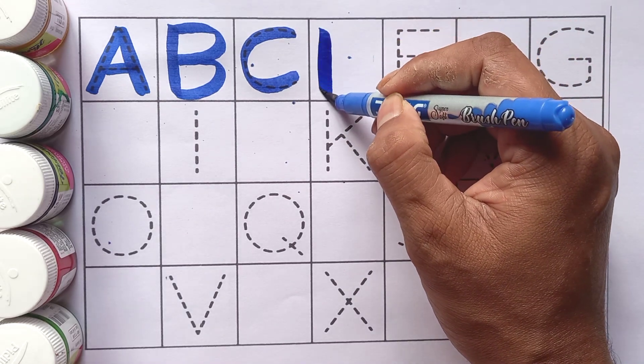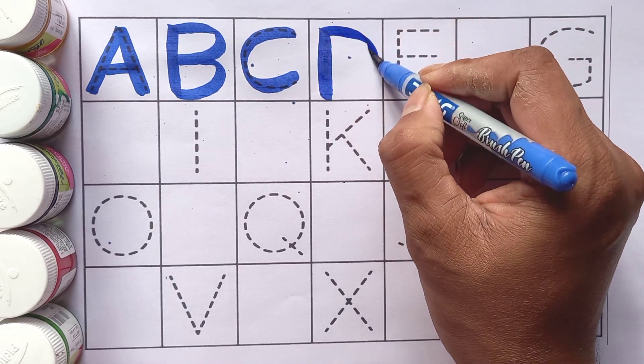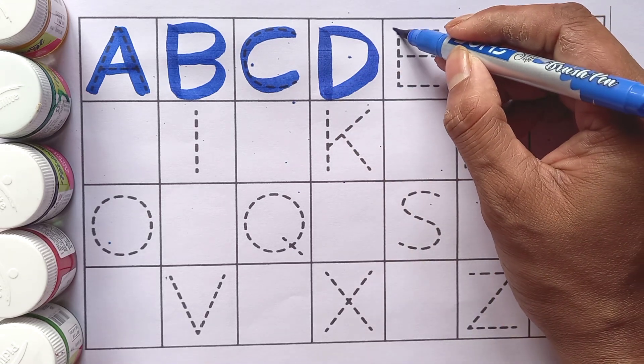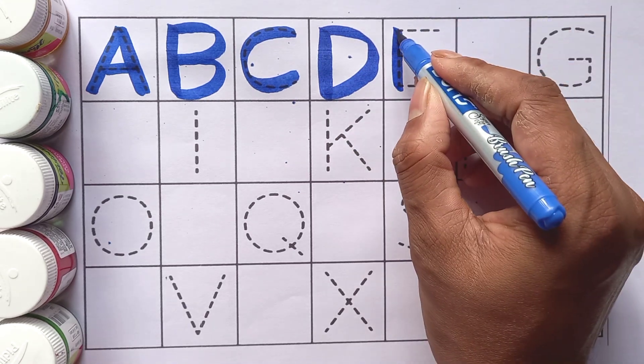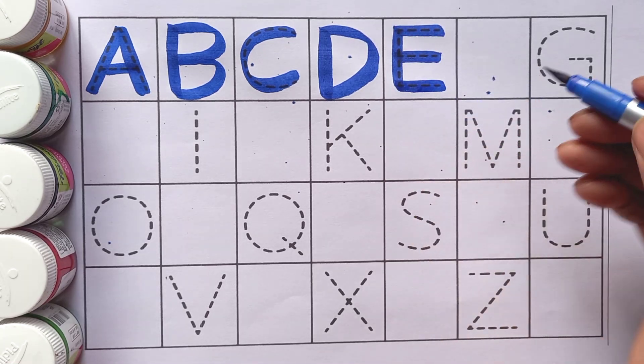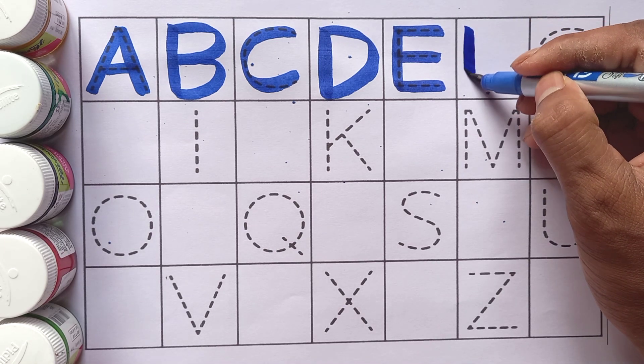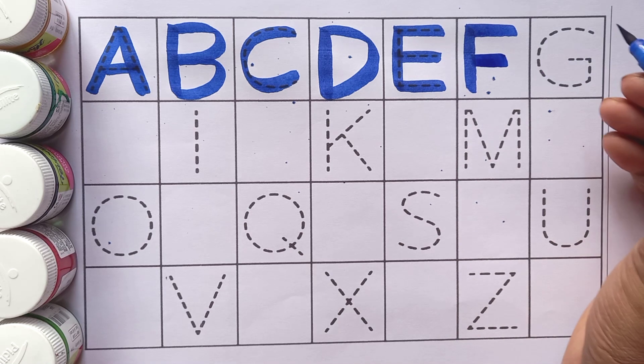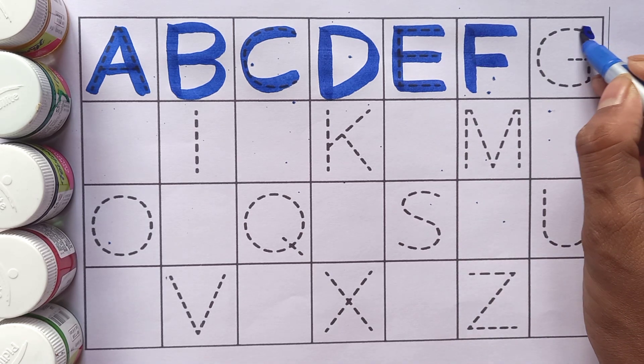D. D for dog. E. E for elephant. F. F for fish. G.